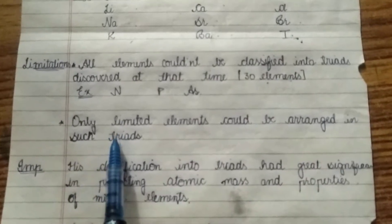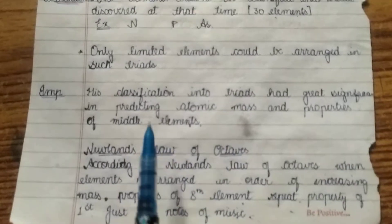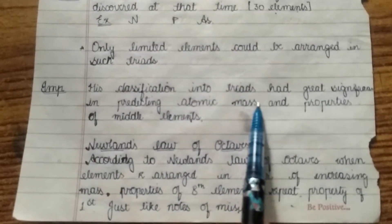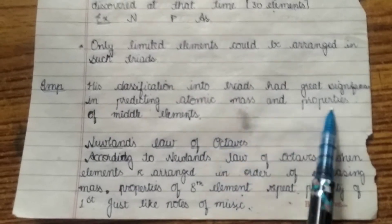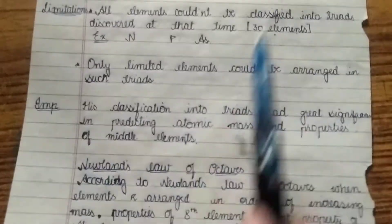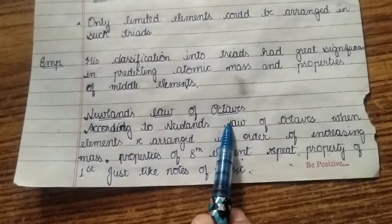Now other limitation is only limited elements could be arranged in such triads. Now its importance, his classification into triads had great significance in predicting the atomic mass and properties of the middle elements, that is sodium, strontium and barium.